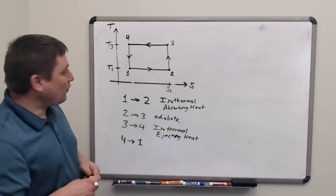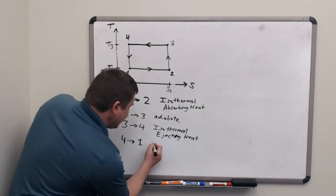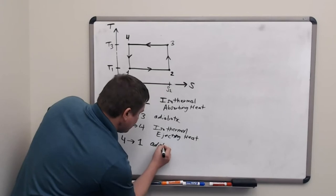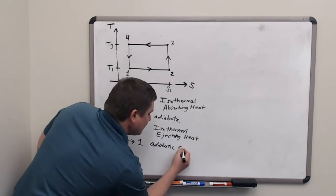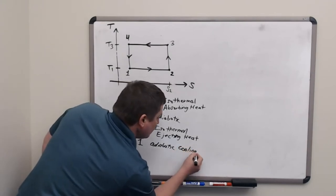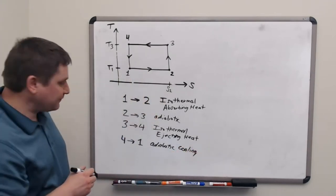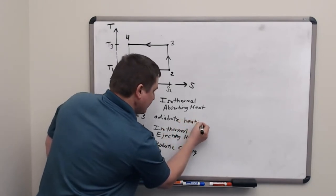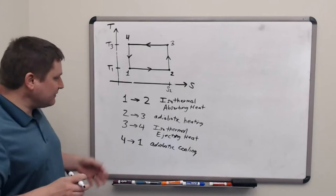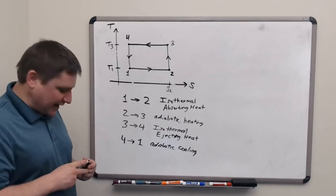And our final step, 4 to 1, is again adiabatic. This time we're reducing temperature. So we have an adiabatic cooling. Here I should say adiabatic heating. So that's the basic analysis of each of the four steps of the cycle.